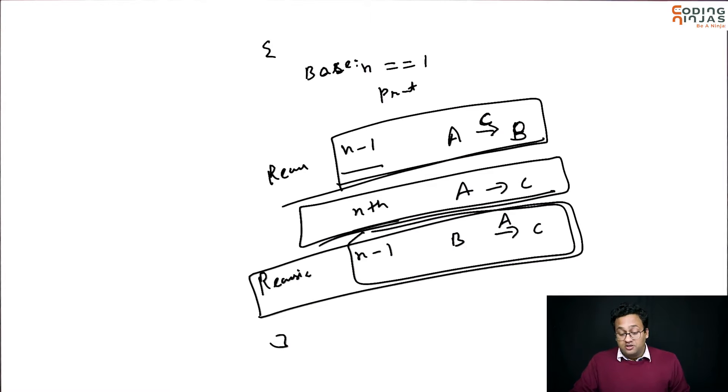So, quickly write code for this. It's going to be very simple. Just try and replicate exactly what I said. That you need to worry about moving n minus 1 from A to B using C. Now, move the largest disk from A to C. And now move these n minus 1 from B to C using A as the helper.